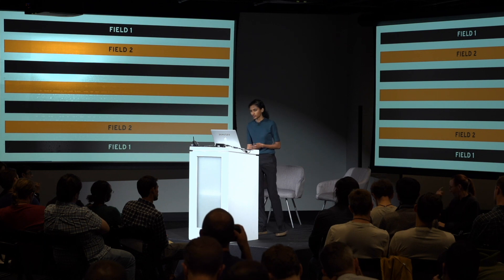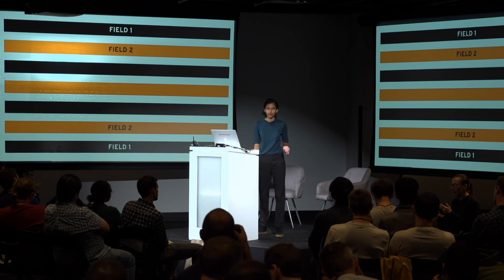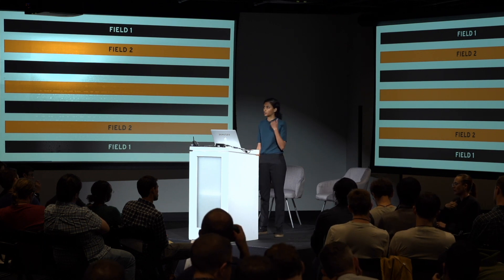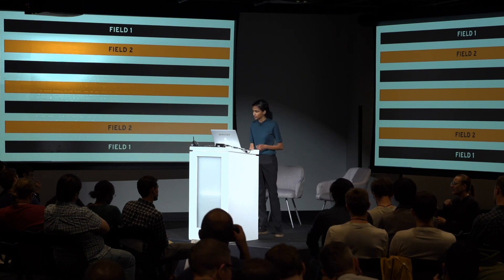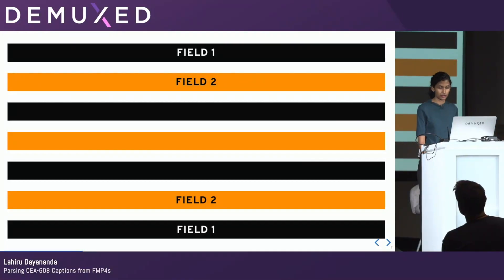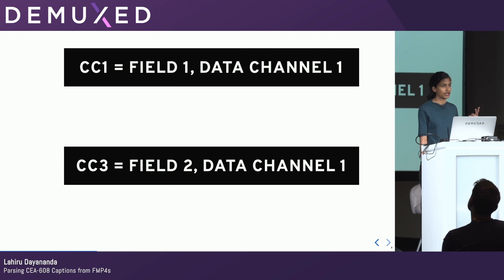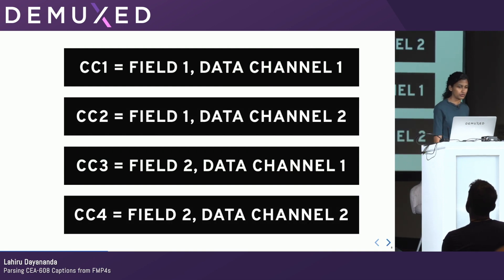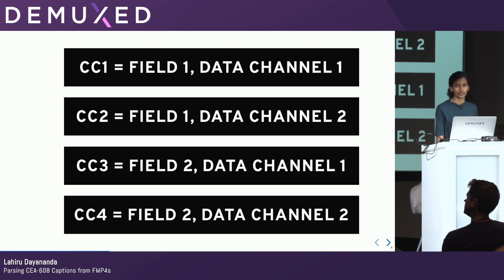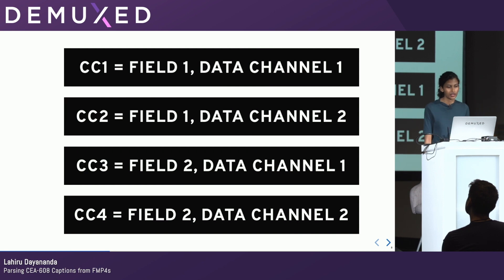The data channels are artificially specified. There are two, and they're used in combination with the video fields. You'll have two channels for each video field — CC1 and CC3. Those are synchronized with actual video data. But you also have two extra channels which are not synchronized with the video data and can have some extra information, maybe to explain the situation, and so on.